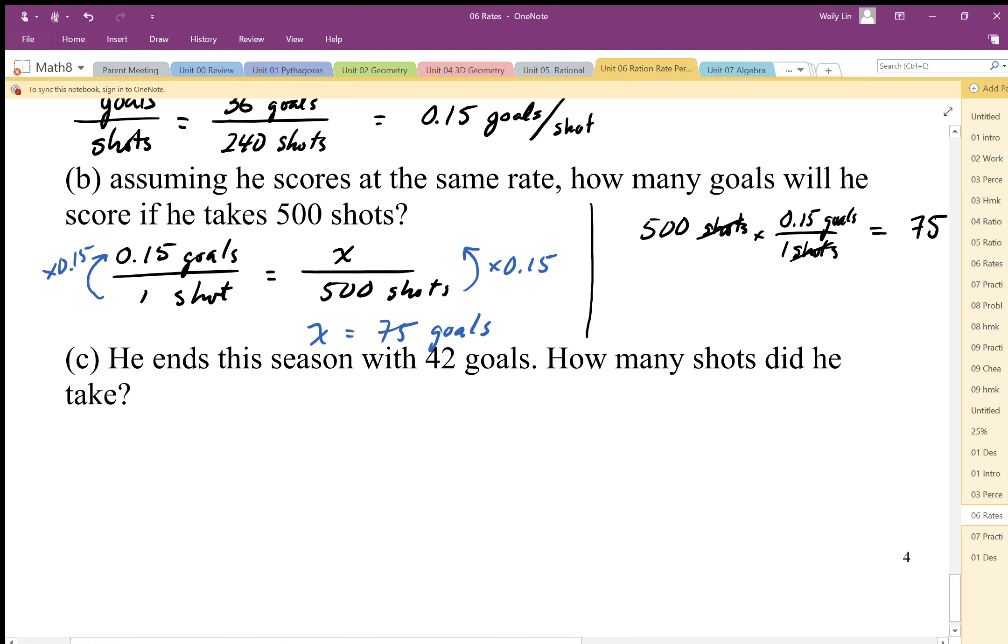This one is the opposite. If you were guessing, it's probably going to be divide, which would be correct, but let's make sure we can set this up. I have 0.15 goals for one shot. In this case, we know the goals and want to find the shots, so our multiplier is going in this direction, so we should divide in the other direction. That gives us 42 divided by 0.15, which equals 280 shots to get that many goals.